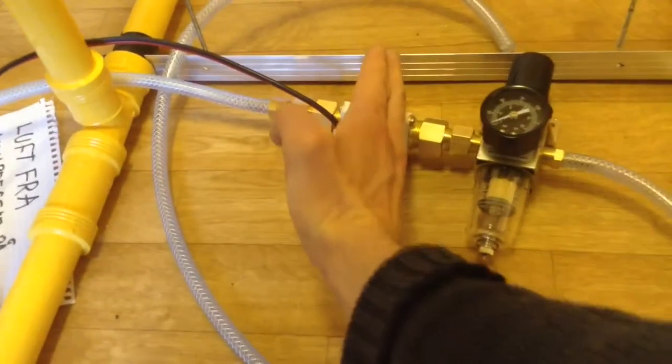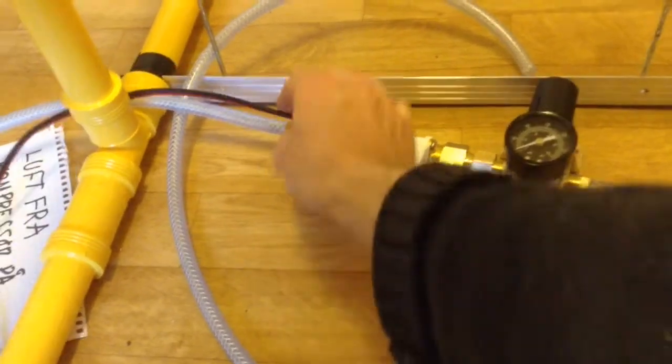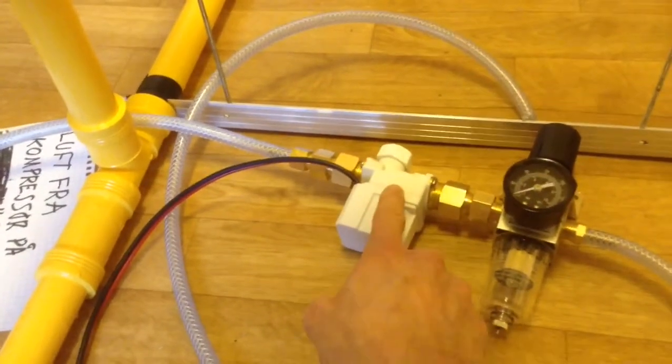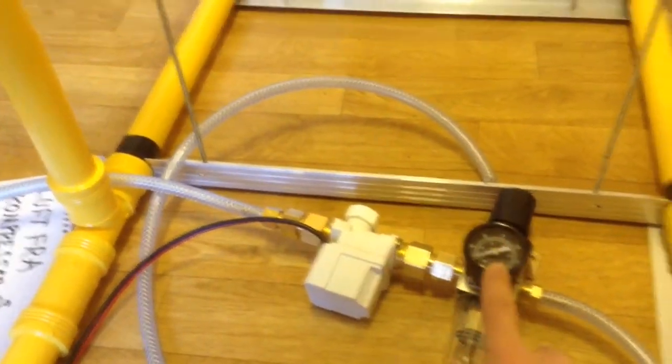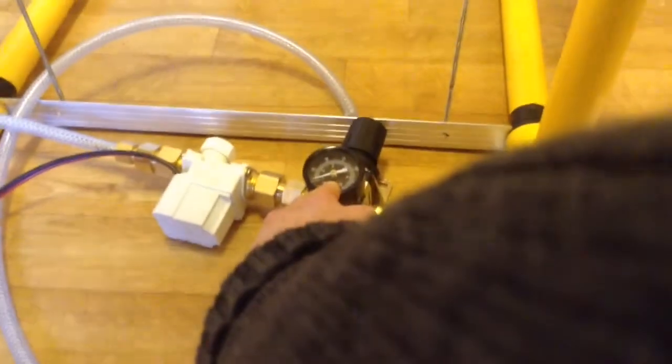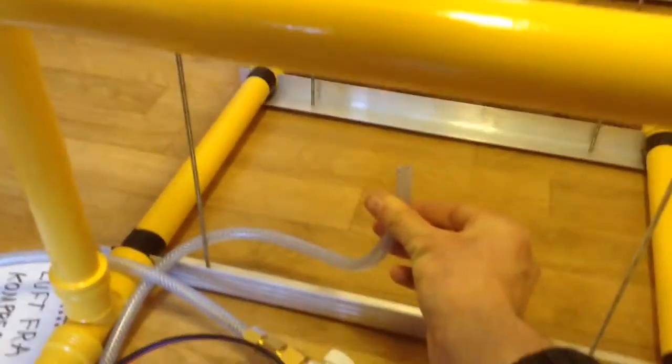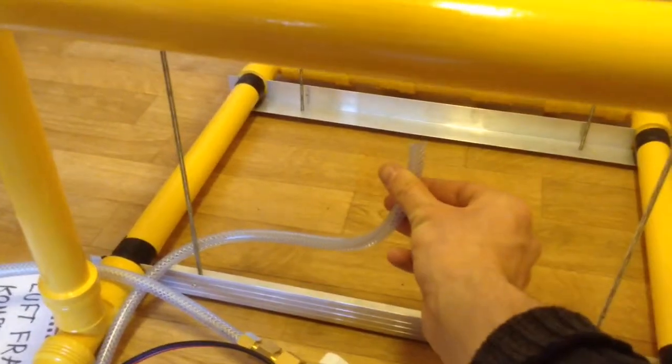This is the solenoid valve. The air is shut down here until I give a signal - it's normally closed. When I give an electrical signal, the valve opens and air floods in here. I'm gonna maintain maybe one or two bars of pressure. The air goes through this hose into the ballast tanks you just saw.